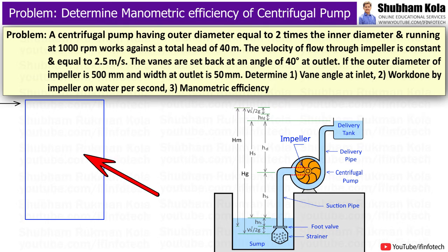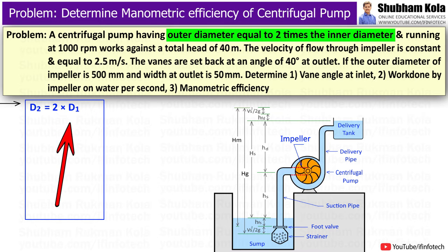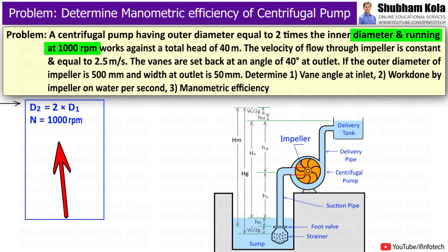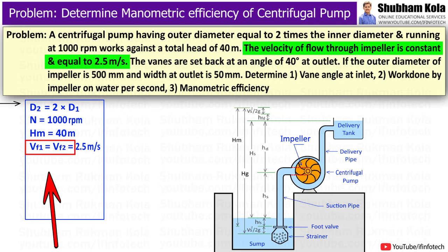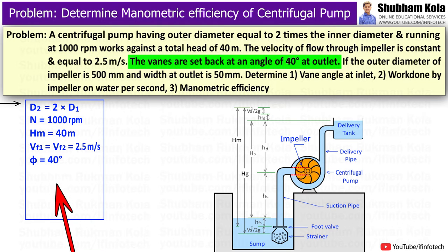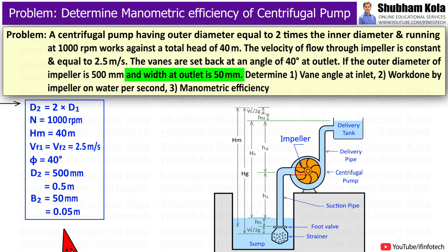To solve this problem, I will first write down the given data: D2, the outer diameter of the impeller, is 2 times the inner diameter D1. The impeller runs at N = 1000 rpm. Manometric head HM = 40 m. Velocity of flow is constant: Vf1 = Vf2 = 2.5 m/s. Vane angle at outlet is 40 degrees. Outer diameter D2 = 500 mm = 0.5 m, and width at outlet b2 = 50 mm = 0.05 m.